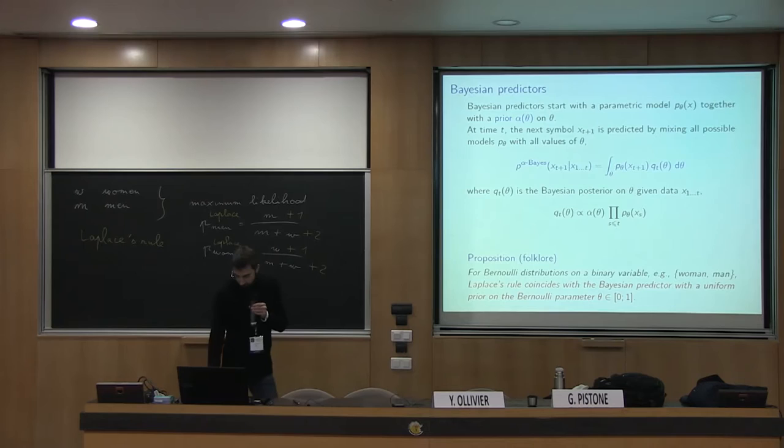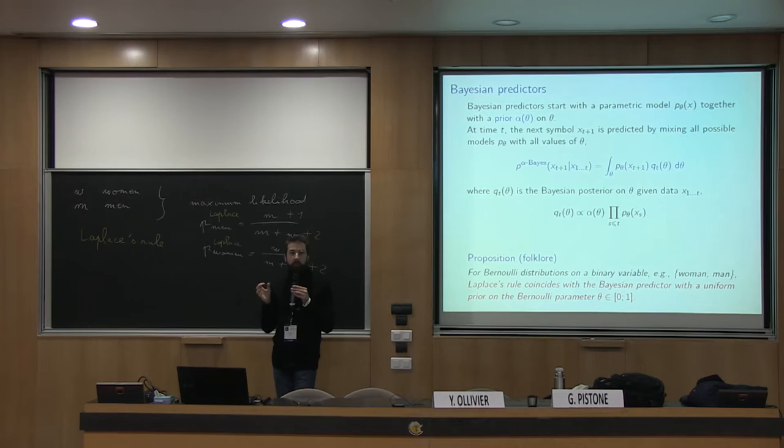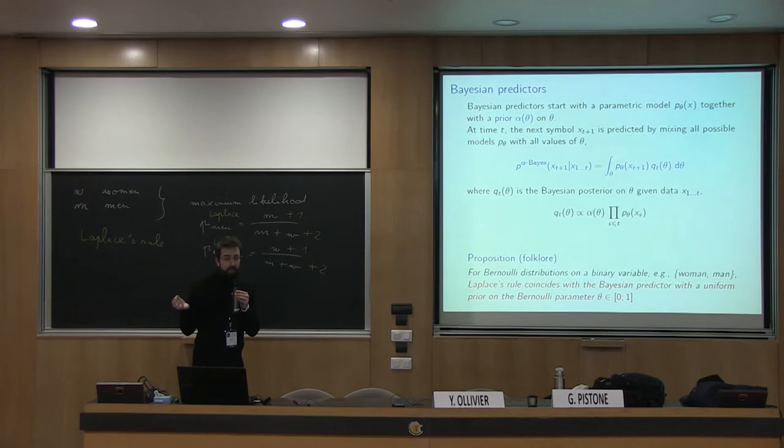My goal for this talk is to come up with a simple rule looking a little bit like Laplace's rule to approximate Bayesian predictors. Bayesian predictors have many advantages but are difficult to compute. I want to try to generalize Laplace's rule — it will not be exact, but approximate at first order in 1 over t. Remember, typically different predictions differ by 1 over t, so I want to get at least this order right.